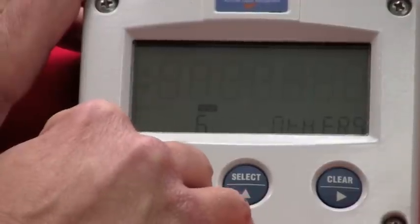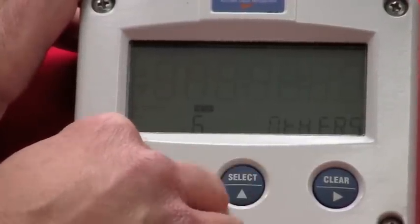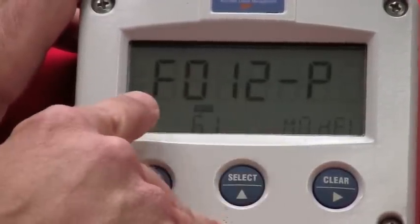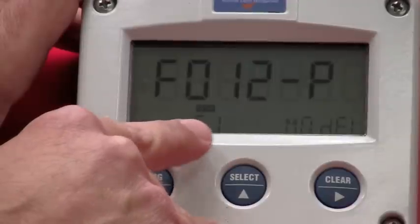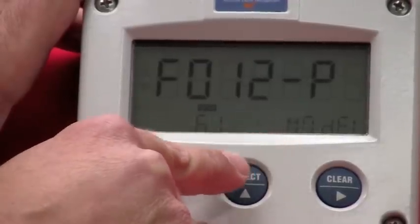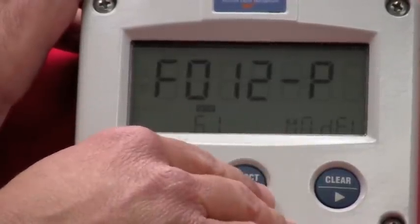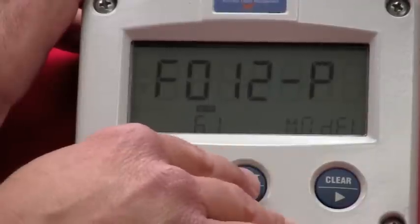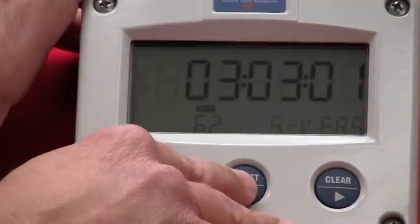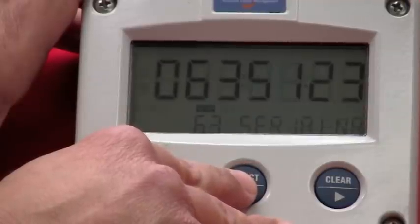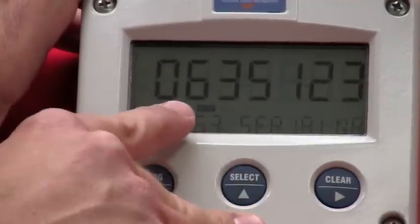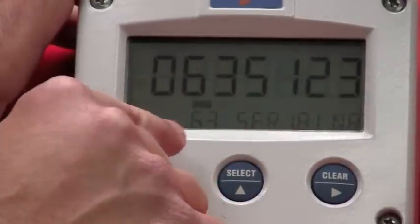You're back to the top of the menu. Let's hit one more. This is the other menu. To get into there, we're just going to hit select. This is the model. Our particular demo is an F012P for pulse. This takes a pulse input. We arrow up again. You'll see the software version. You'll also see the serial number.